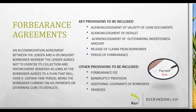Waiver and release of claims: one of the key components of a forbearance agreement is that the lender obtains the borrower's release of prior claims against the lender. This puts the borrower in a position where they must decide whether to pursue those claims, reserve them, or move forward with the forbearance agreement to get additional time. Forbearance period: each forbearance agreement provides for a specific amount of time for the borrower to implement their strategy — that can be 60 days, six months, or in agricultural settings, sometimes up to a year.